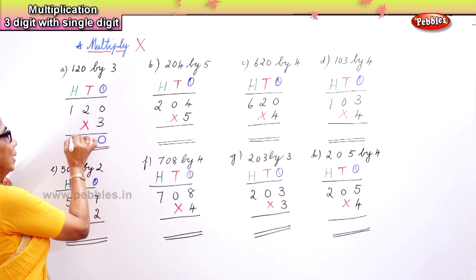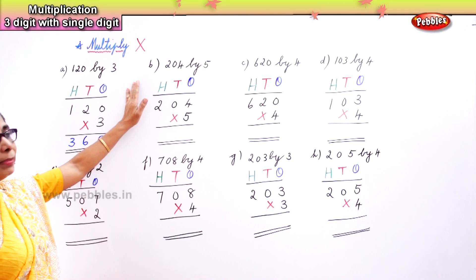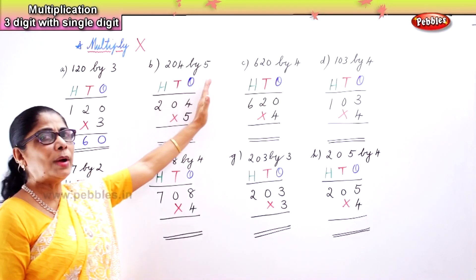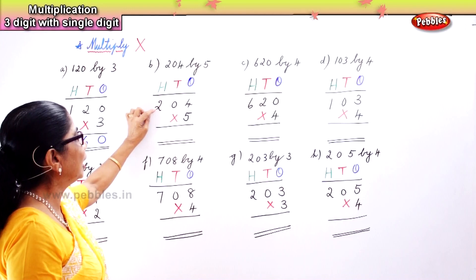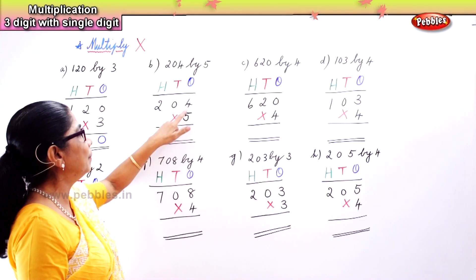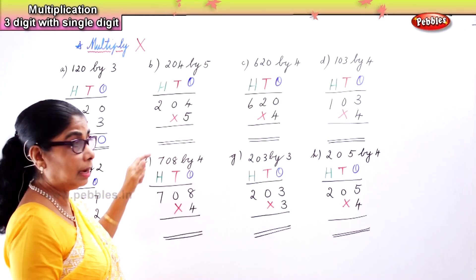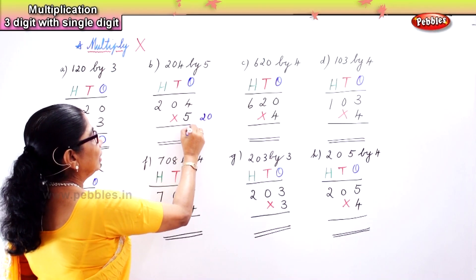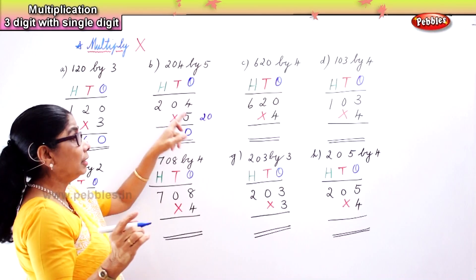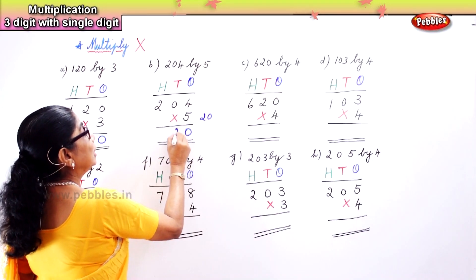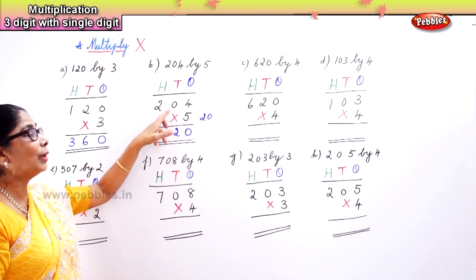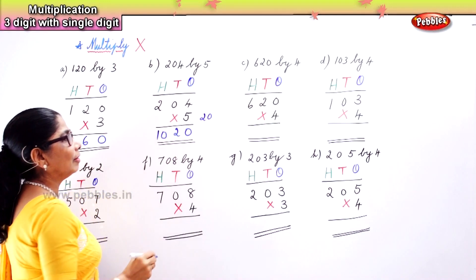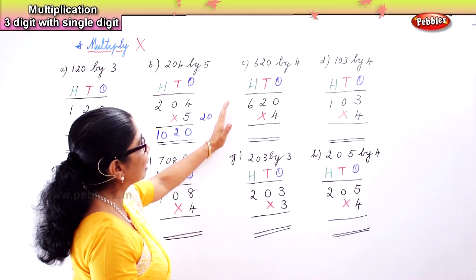Zero multiplied by any number, the product is zero. Now two threes are six. Then one three is three. Next: 204 multiplied by 5. Do the ones first. Four fives are twenty — so you put zero here. Five into zero is zero, so we carry the two. Five twos are ten.